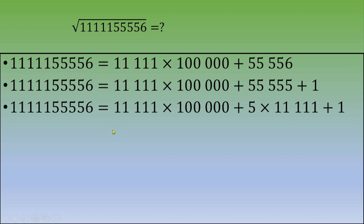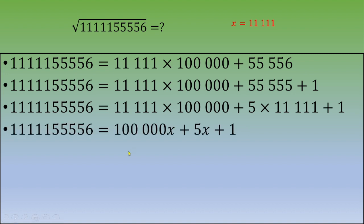We have two occurrences of the same number, eleven thousand one hundred eleven. So let's say x equals eleven thousand one hundred eleven. If we plug in the value of x, we get one hundred thousand x plus five x plus one.